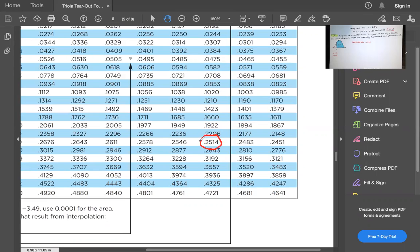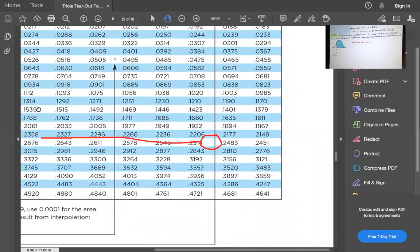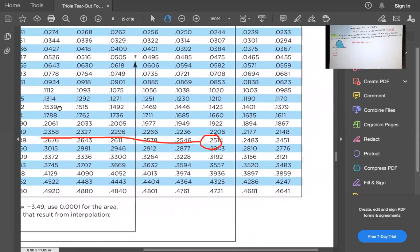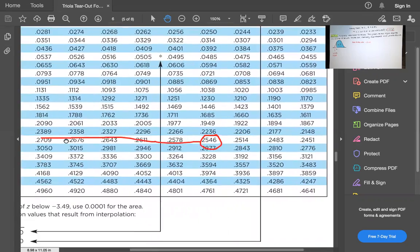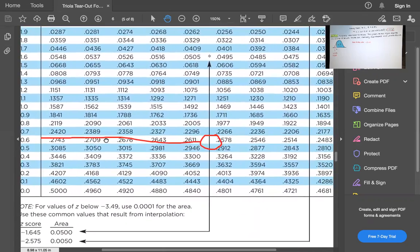And we want the z-score that goes with that. So I want to go over here and find out what the z must be. Where did that go? 0.25. It was that number. So we're in this row right here. So that's z equals negative 0.6.